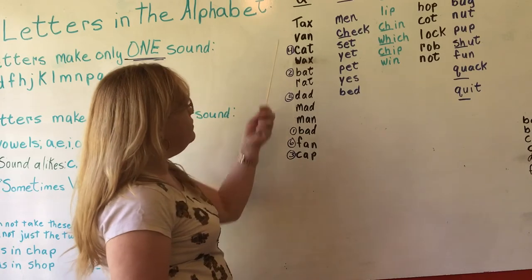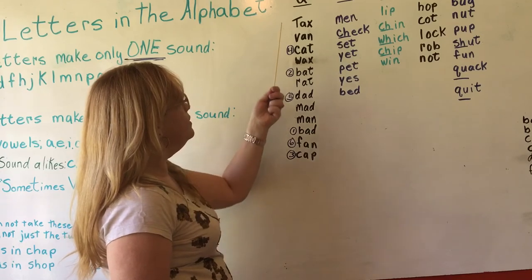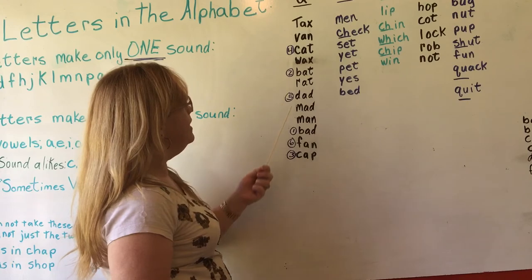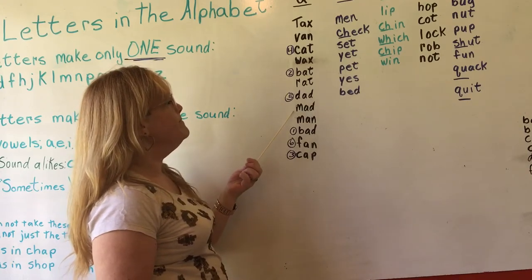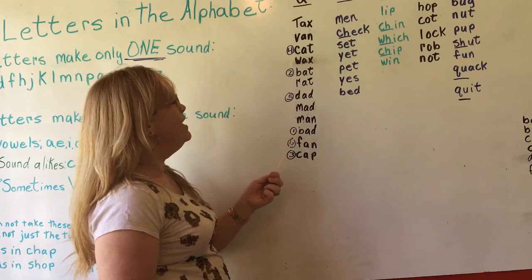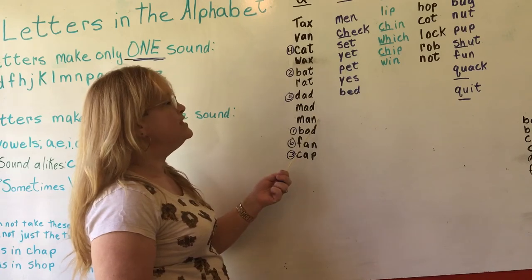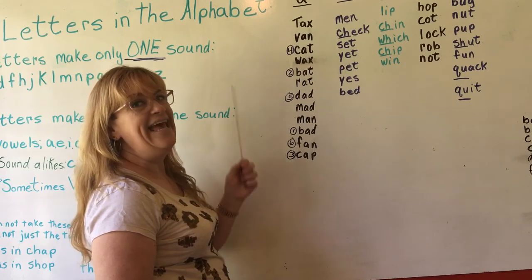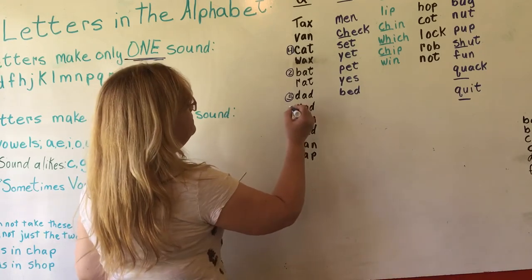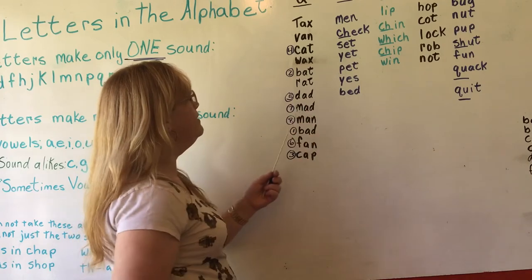G? No. H? No. I? No. J? No. K? No. L? No. M? Yes — we have two M words: mad and man. They both have M, both have A, so we go to D and N. Does D come before N? Yes — D comes before N. So mad, then man.